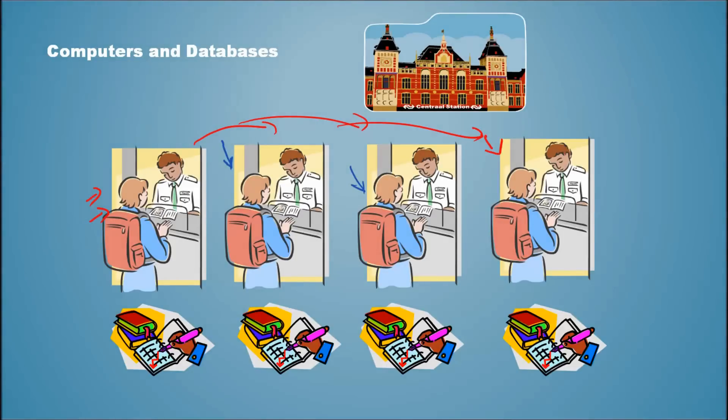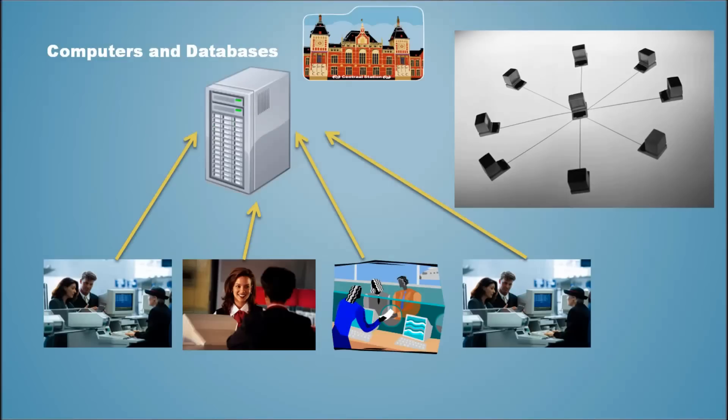So, how do we solve that? The solution: computer based databases. Install the databases, use computer systems and computer networking systems. Install databases on a singular system. Note, I am using the word singular system, not a singular computer. I will explain that later. But use the database, install the database in a single system where all these ticketing officers can access a single database. So, that's the solution, computer based databases.